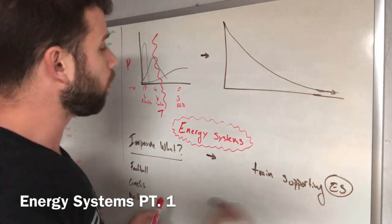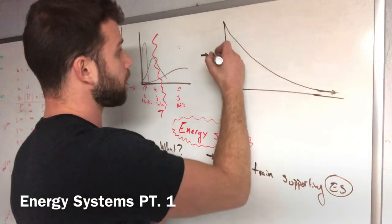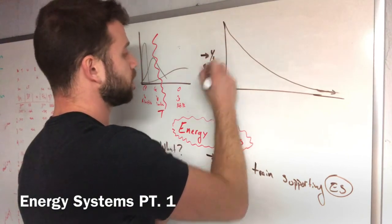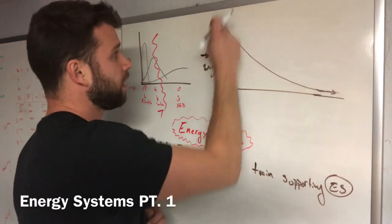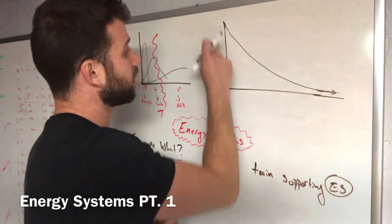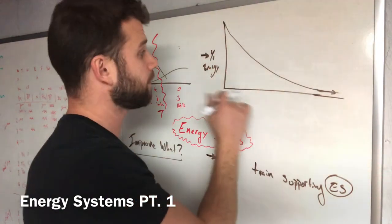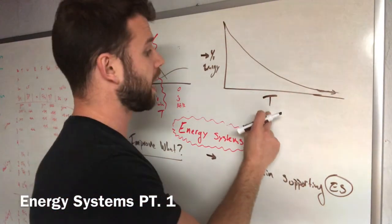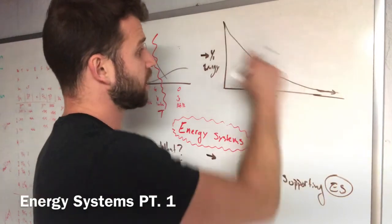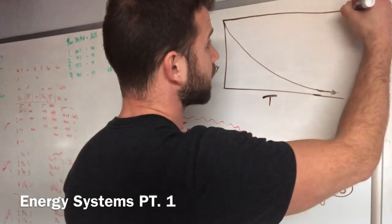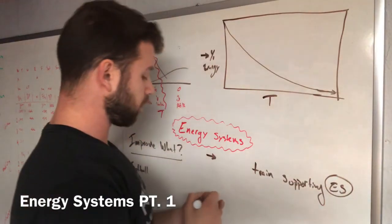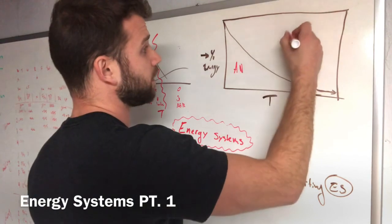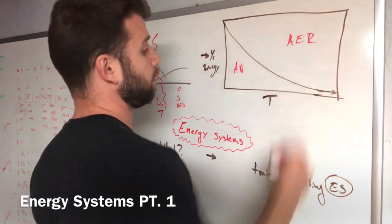What we have here is percent of energy. So instead of thinking of this as power output, this axis for this one, we're going to think of percent of energy. Stay with me. This one is going to be time. So the longer the time, the change in the percent of energy. And I'm going to turn this into a box just to make this easier for us. And this is going to be anaerobic and this one's going to be aerobic.